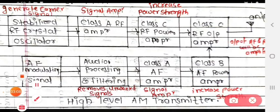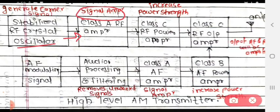The class A RF amplifier is used as a signal amplifier. The class A RF amplifier output is then going to the class C RF power amplifier, which increases the power strength of the signal. Then the class C RF power amplifier output is going to the class C RF output amplifier.